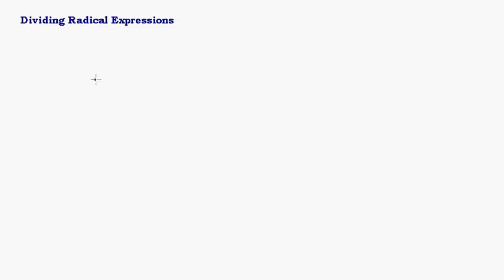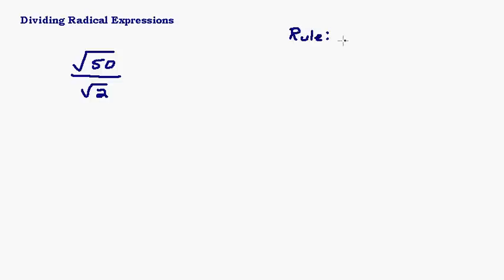In this video, we're going to look at dividing radical expressions, and this brings up something called rationalizing the denominator, but we'll get to that in a second. Let's look at an easy type problem — say you had something like the square root of 50 divided by the square root of 2. Remember the rule for multiplying: if you had the square root of a times the square root of b, that is the square root of ab.